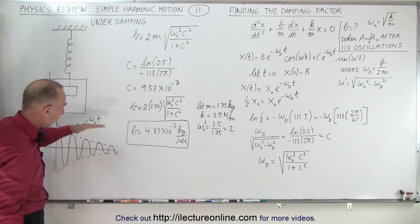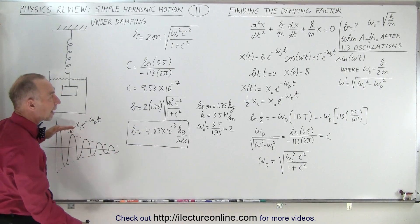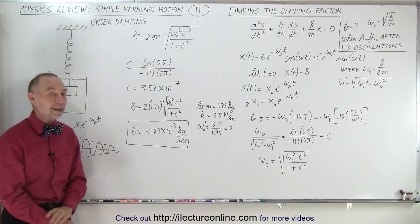So after 113 oscillations, we're down to half the original amplitude, and in a case like that, that is how we find b.